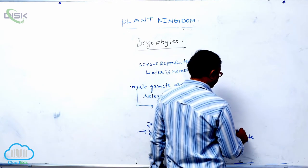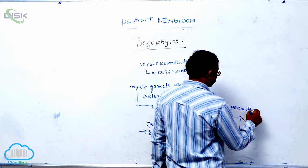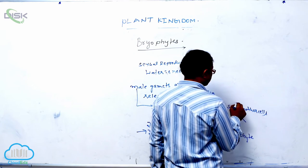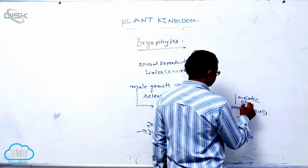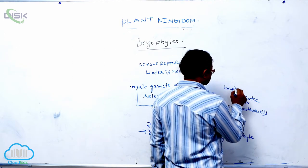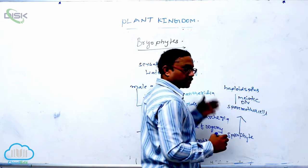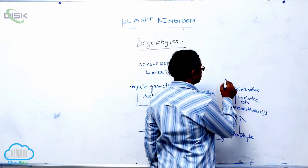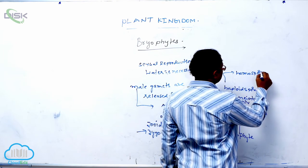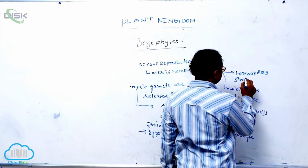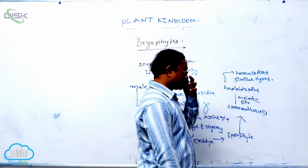This sporophyte producing spore mother cells. These spore mother cells undergo meiotic division. Meiotic division producing haploid spores. Most of all bryophytes are produced similar type of spores. That is known as that homosporous condition. Homosporous means similar type of spores. That is known as that homosporous condition.